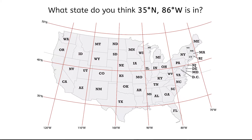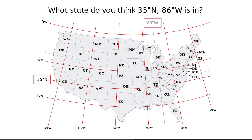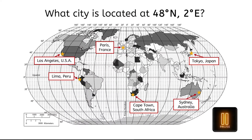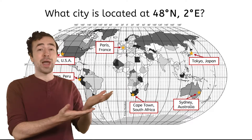If you still couldn't figure it out, no worries. Find where the 35 degrees north line of latitude would be — right about here, halfway between 30 and 40. Next, find where the 86 degrees west line of longitude would be — right here, just before the 90 degree line. Finally, find the spot where those lines intersect. I'm in the great state of Tennessee! Now try one on your own: what city is located at 48 degrees north and 2 degrees east? It's Paris, France!